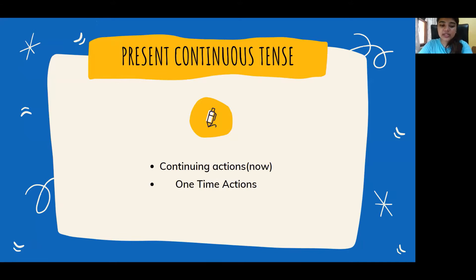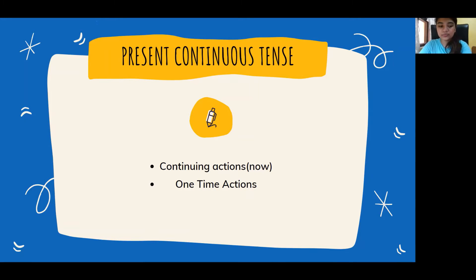The second tense is the present continuous tense. We use present continuous tense for continuing actions — actions that are happening now. For example: 'I am teaching,' 'I am standing,' 'I am speaking.' We also use it for trends — things happening in your society right now. For example, 'That TV show is becoming popular' or 'The world is getting warmer.' These are things happening now.